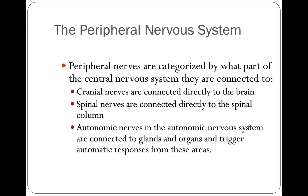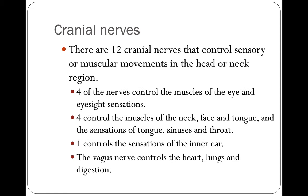There are 12 cranial nerves that control sensory or muscular movements in the head or neck region. Four of the nerves control the muscles of the eye and eyesight sensations. Four control the muscles of the neck, face, and tongue, and the sensations of tongue, sinuses, and throat. One controls the sensations of the inner ear. The vagus nerve controls your heart, lungs, and digestion — it's really important that your vagus nerve is healthy. It's in the middle of your body and is hard to get to.